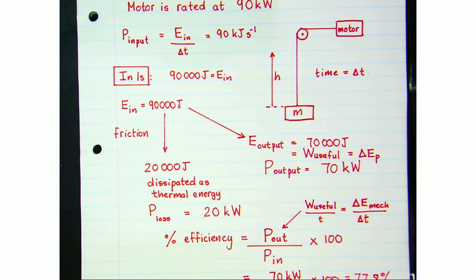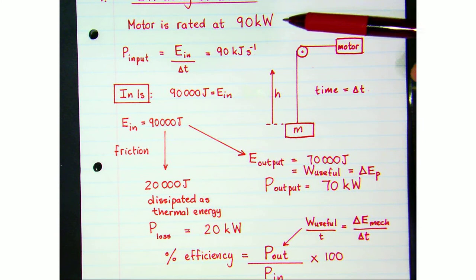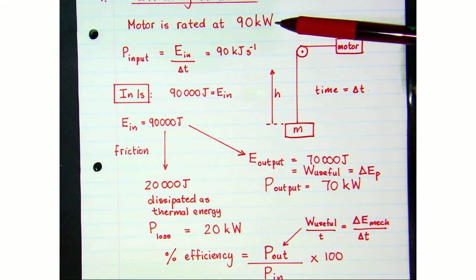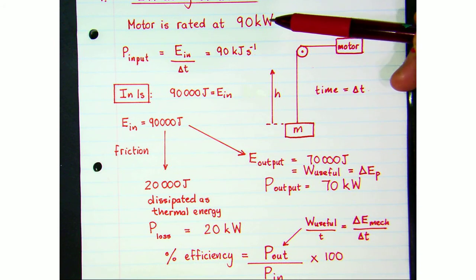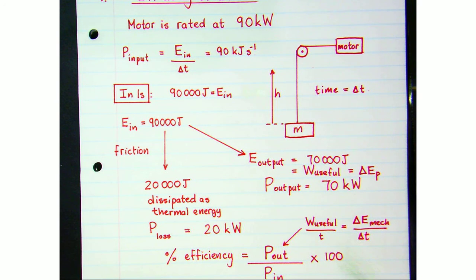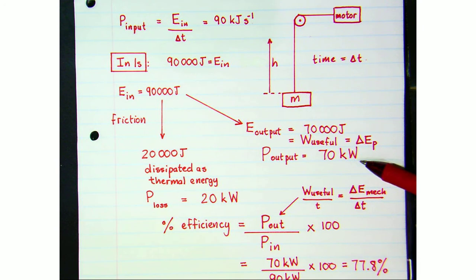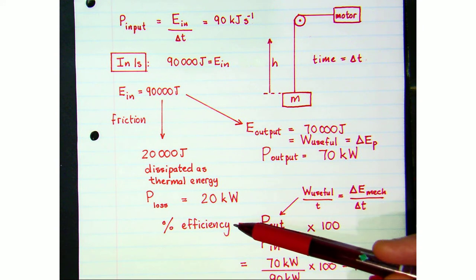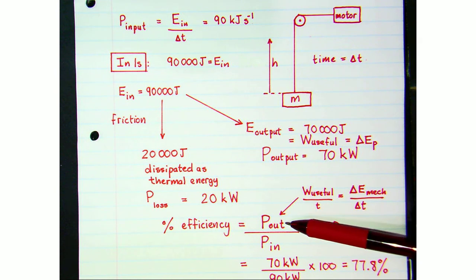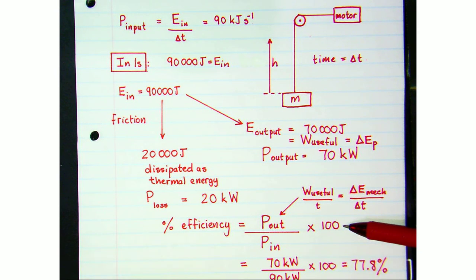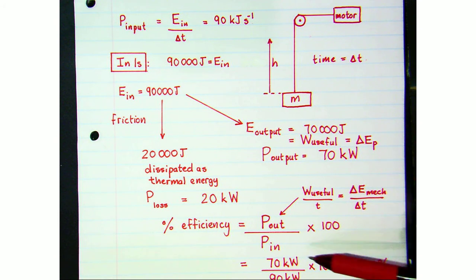The input power is the total power supplied by the motor — in this case 90,000 joules per second entering the system. The output power is just 70,000 joules per second. So working out the percentage efficiency, we look at the ratio of output power to input power and multiply by 100. The output power is 70 kilowatts.